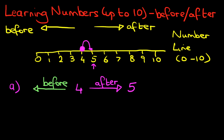Now how about the number before? The number before, we start at 4 and we take one jump back. And it is at number 3. So the number after 4 is 5, the number before 4 is 3.